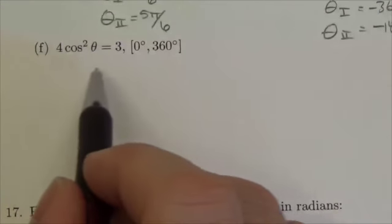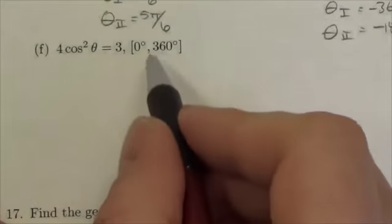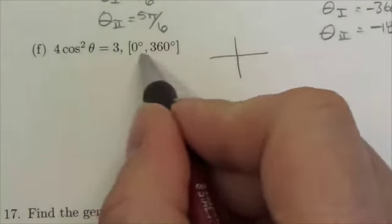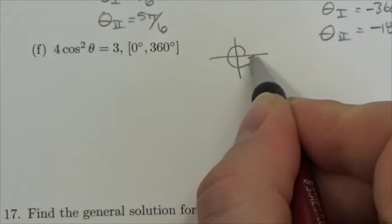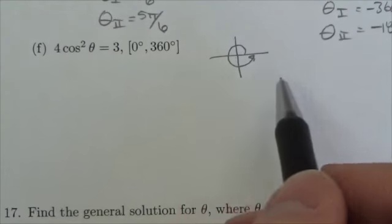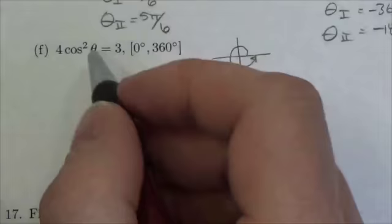Hi everyone, so in this question we're being asked to solve this equation here in the domain from 0 to 360. That's a full positive rotation, and notice that with the square brackets here we are including the 0 and the 360. It might be an issue, might not be an issue.